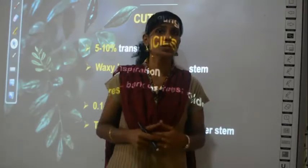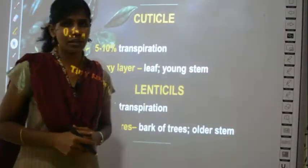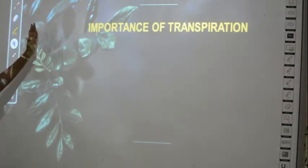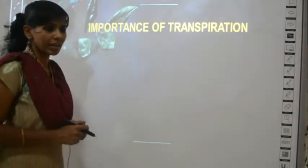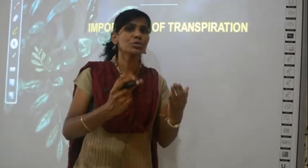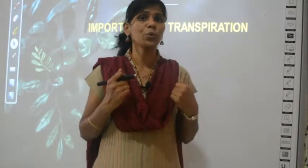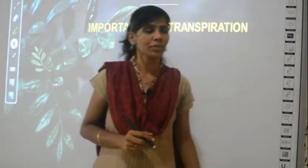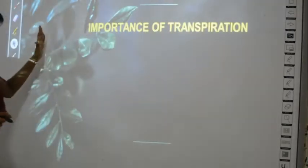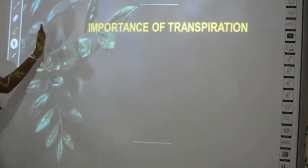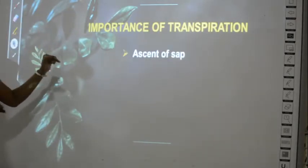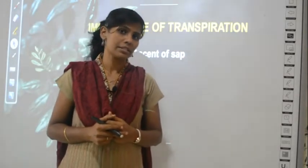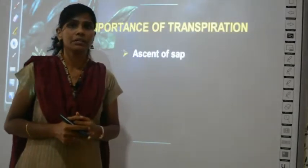We have learned that transpiration happens through stomata, cuticle, or lenticels — water loss from the plant happens by these three ways. Next we learn about the importance of transpiration — how it is useful for the plant. There are four uses: ascent of sap, water cycle, distribution of minerals, and cooling effect.